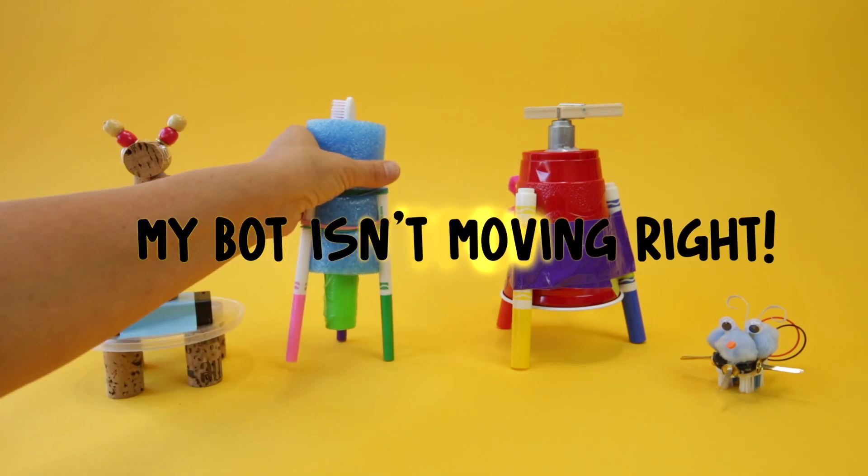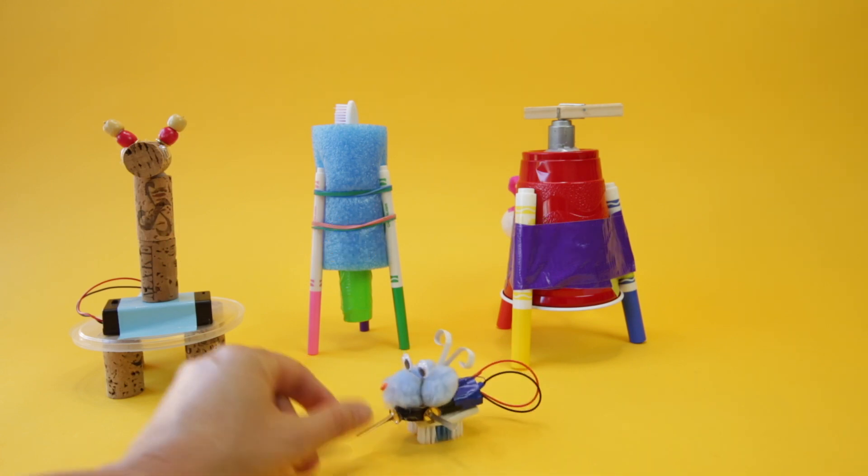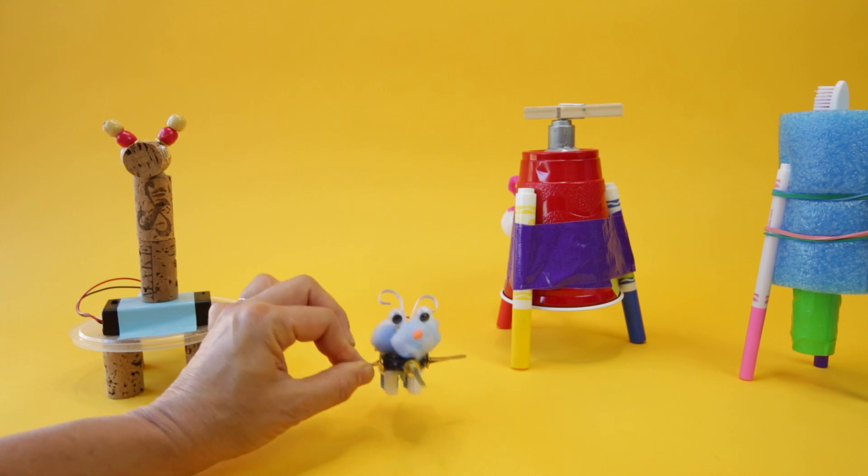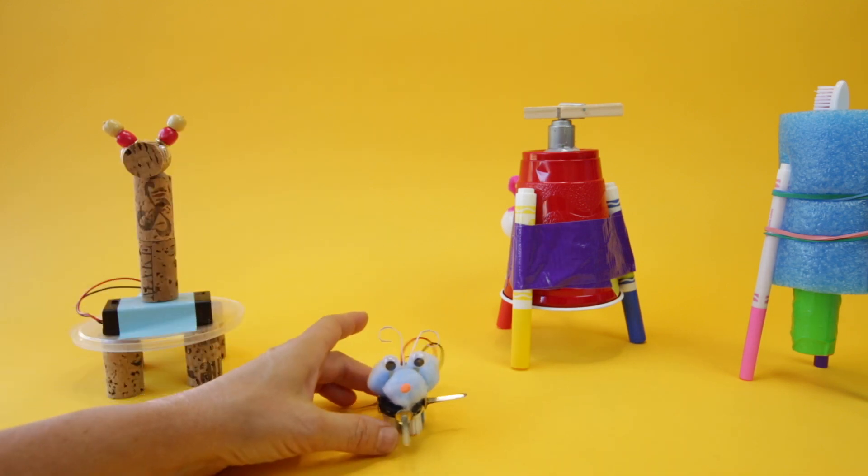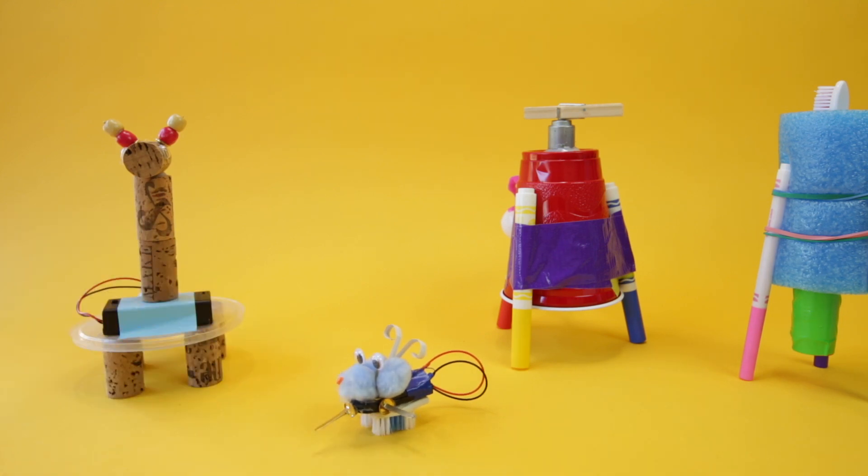This is a really common issue I have, especially with brush bots. Brush bots tend to move in a circular motion, and there's a lot of factors affecting why and how they move. So that's one of the things that kids come to me often with. It's working, but it's not moving the way I want it to.